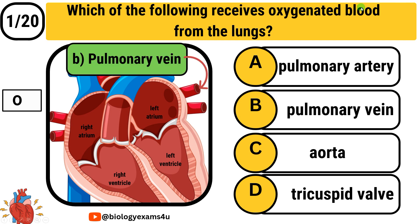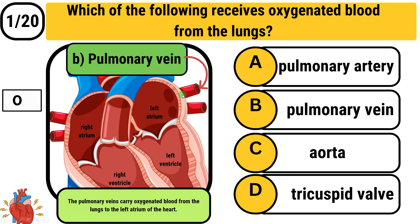The answer is pulmonary vein. The pulmonary vein carries oxygenated blood from the lungs to the left atrium of the heart.